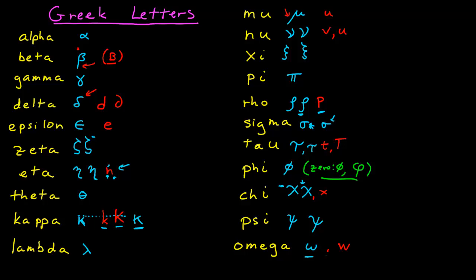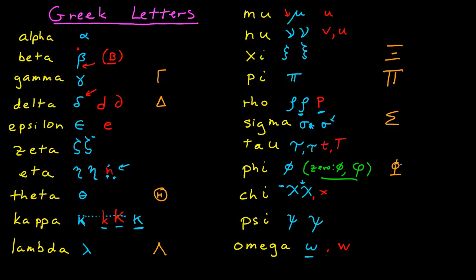Just for completeness, let's do some of the capital letters that are commonly used. There's usually not problems with these as far as penmanship is concerned. Capital gamma looks like a flipped L; delta is a triangle; capital theta is a big circle with something like a capital H in the middle; lambda is just a triangle without the bottom part; xi is three parallel lines where the middle one is shorter; capital pi is just like pi but bigger; sigma is very common; phi looks like a phi with bars on top; same with psi; and the capital omega is very common.